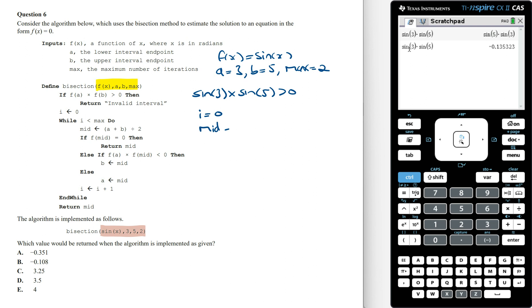The mid value is going to equal a plus b divided by 2. So mid is going to equal 3 plus 5 which is 8, divided by 2, which is equal to 4. Now if f of mid is equal to 0, this means that if sin of 4 is equal to 0, then we return the mid. Sin of 4 does not equal 0, so we go to the next step.